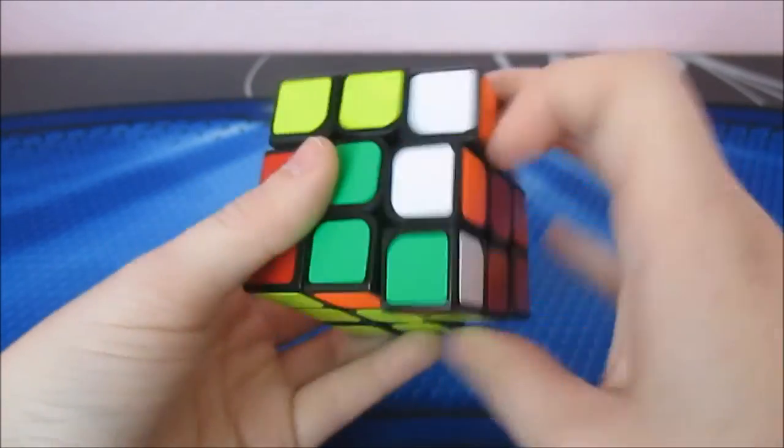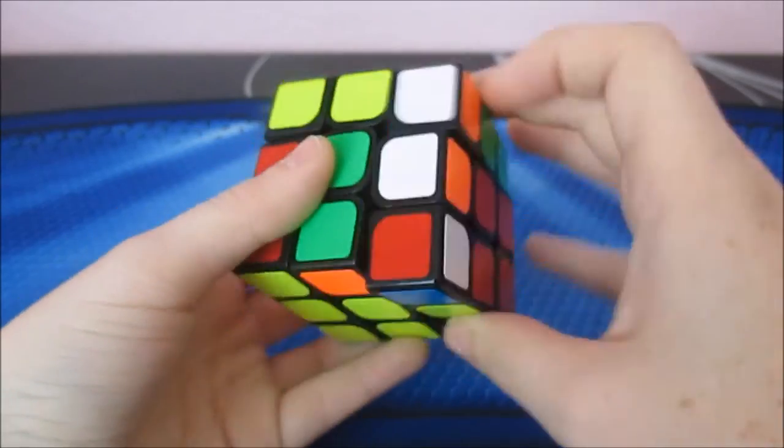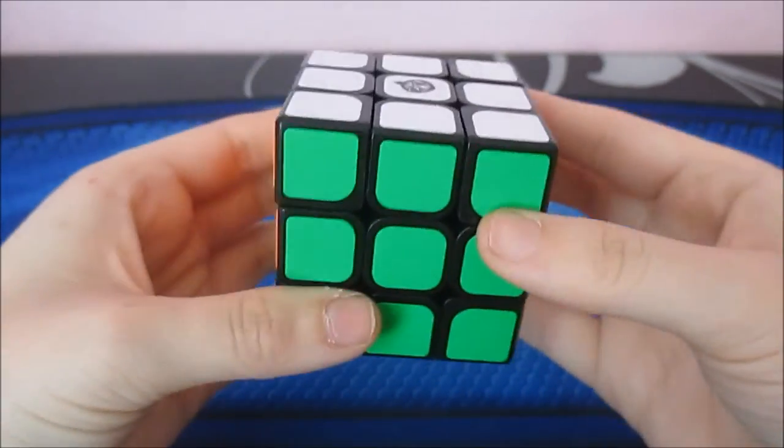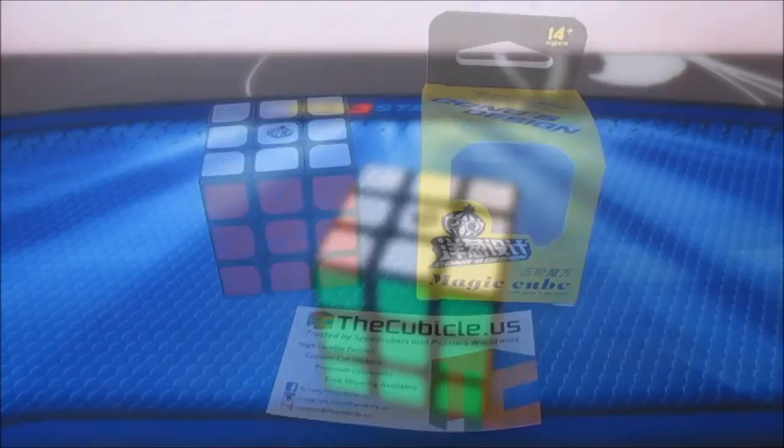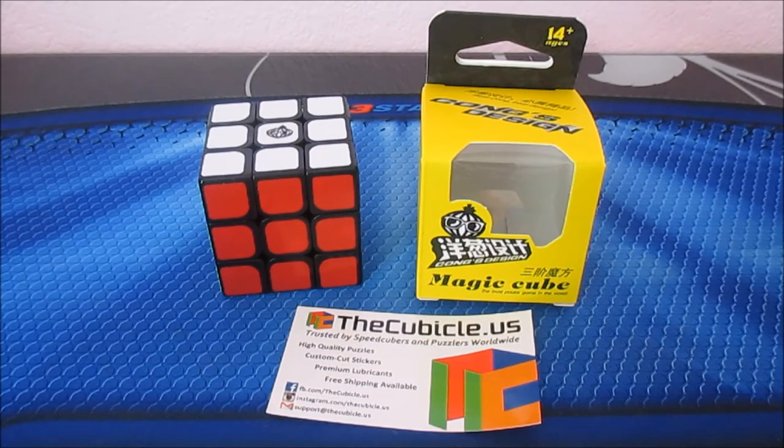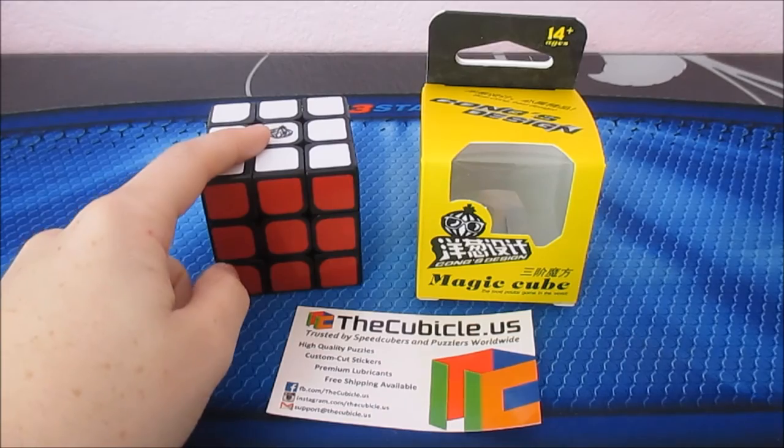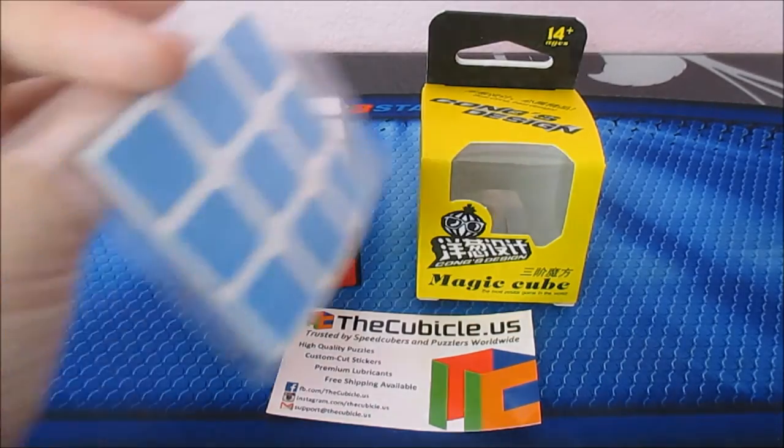But right now, out of the box, I really do like it. Now I have tensioned it a little bit, but other than that, this cube is pretty much how it was out of the box. All right guys, that is it for this unboxing. In this video, I unboxed the new Yuying 3x3 made by Kong's Design as well as some stickers that I did not show you guys.